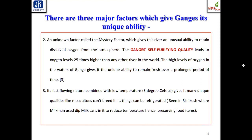An unknown factor called the 'mystery factor' gives this river its unusual ability to retain dissolved oxygen from the atmosphere, leading to oxygen levels 25 times higher than any other river. This high oxygen level gives Ganga water its unique ability to remain fresh over prolonged periods and also reduces BOD and COD levels. The fast-flowing nature combined with the low temperature of approximately 5 degrees Celsius gives Ganga many unique qualities — mosquitoes cannot breed in it, and there was a clear indication that Ganga's self-purifying quality retains lower temperatures, preventing the spread of protozoal infections.